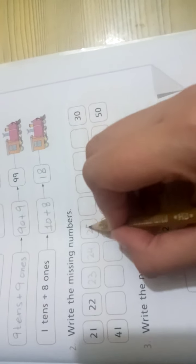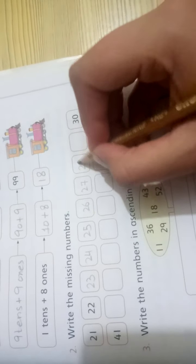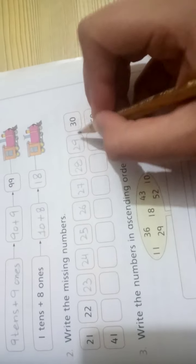Write the missing numbers in sequence counting. Complete: 21, 22, 23, 24, 25, 26, 27, 28, 29, and 30.